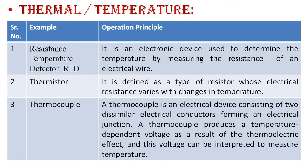Next is the thermistor, a type of thermal resistor whose electrical resistance changes with temperature. Next is the thermocouple, where two conductors are bonded together — one end is the hot end and the other is the cold end. The potential difference gives an output voltage. A thermocouple is an electrical device consisting of two dissimilar conductors forming an electrical junction, producing a temperature-dependent voltage as a result of the thermoelectric effect.